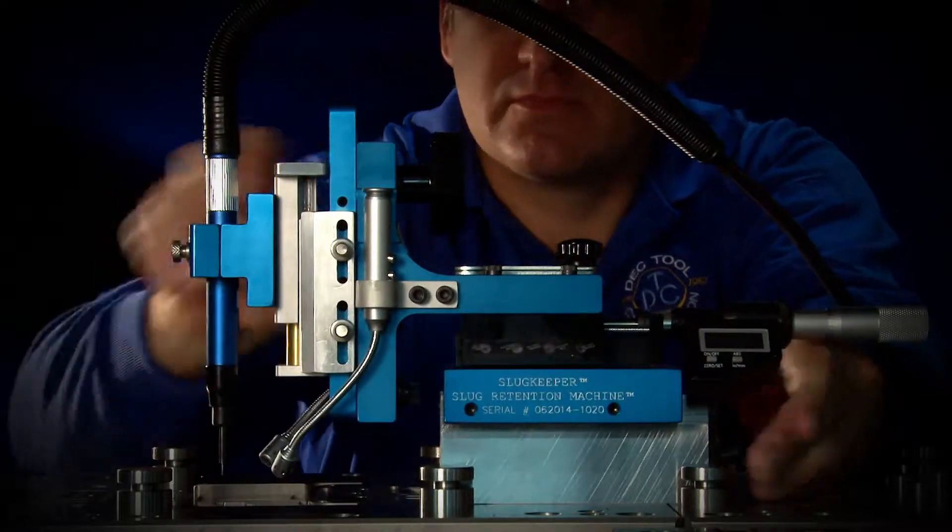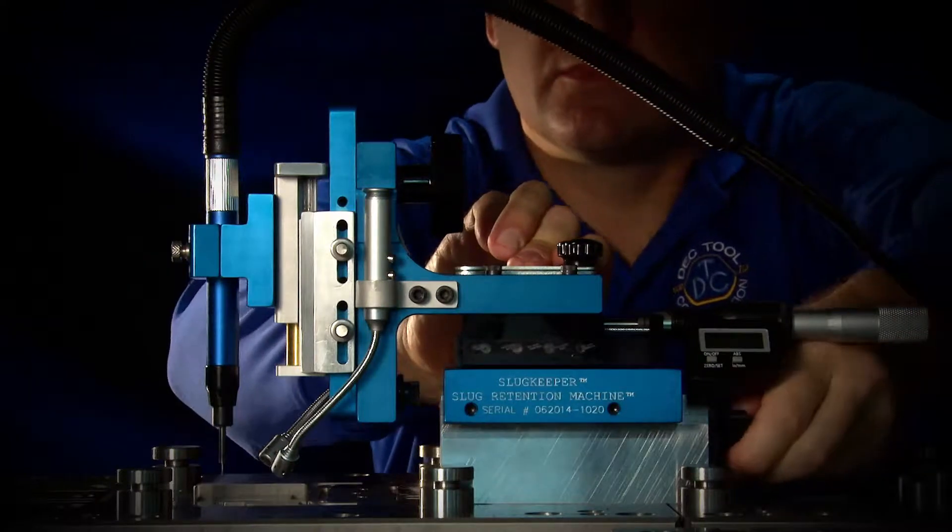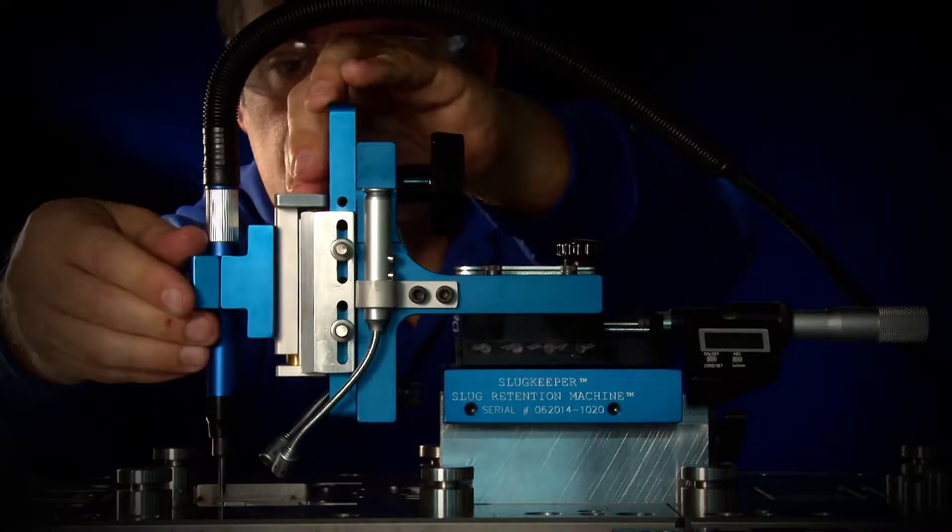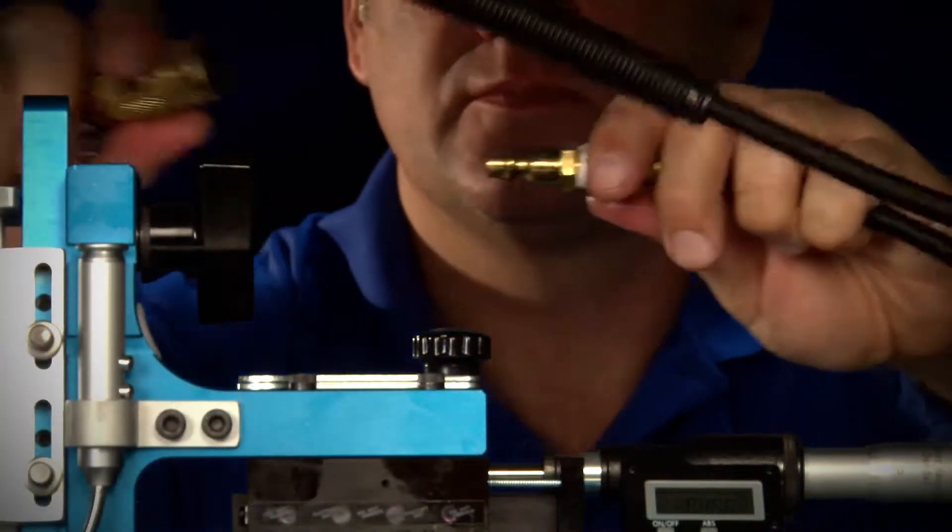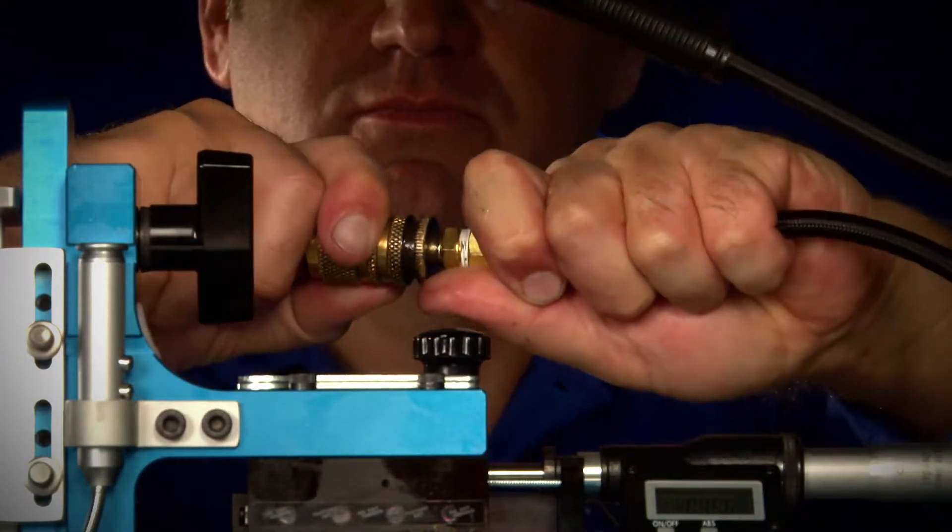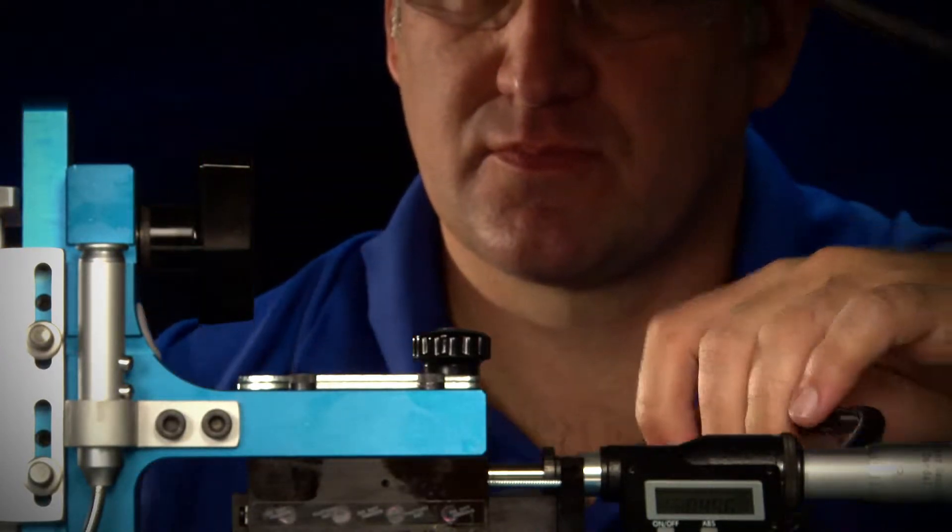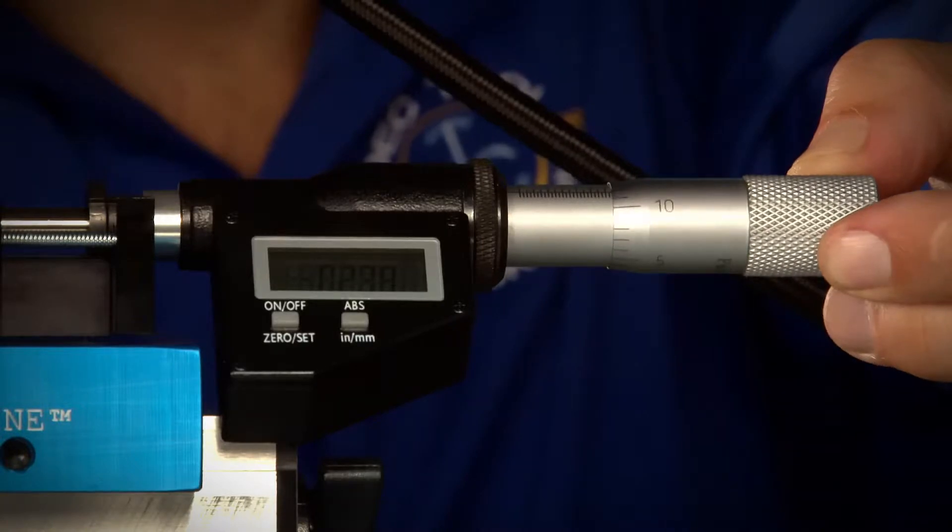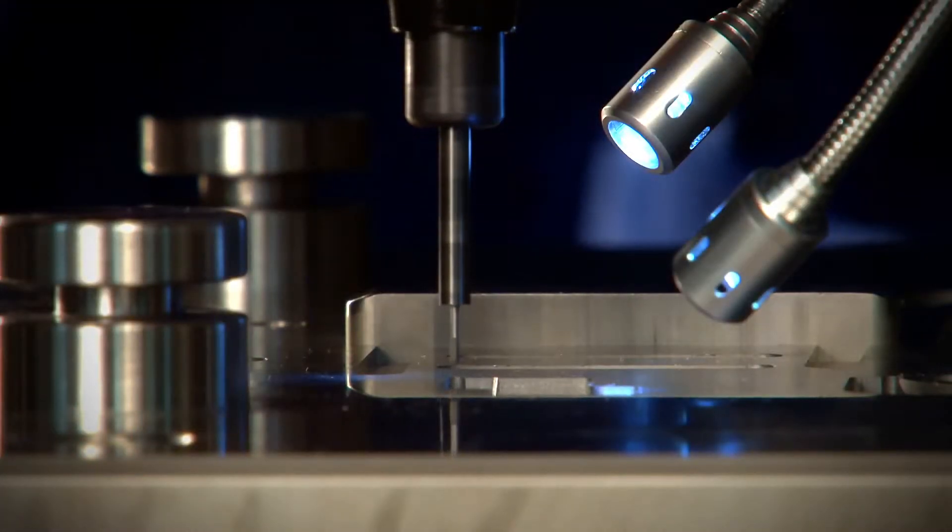Now you can bring the patented slug retention machine to your own work site to address the problems caused by pulled slugs. The slug keeper machine uses a pneumatically powered grinder to precisely machine a small angled groove into the sidewall of the die cavity in a stamping die.